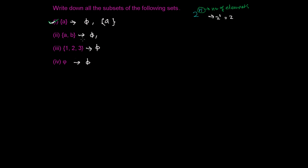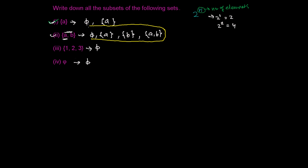In the second question, there are two members, so how many subsets will we get? Two to the power two — that is four subsets. We already have one, which is phi, so now let's write the remaining three subsets. Our first member is A, so we write {A}. Our second member is B, so we write {B}. And we can take A and B together, giving us {A, B}. So these are the four subsets of the set having two members.